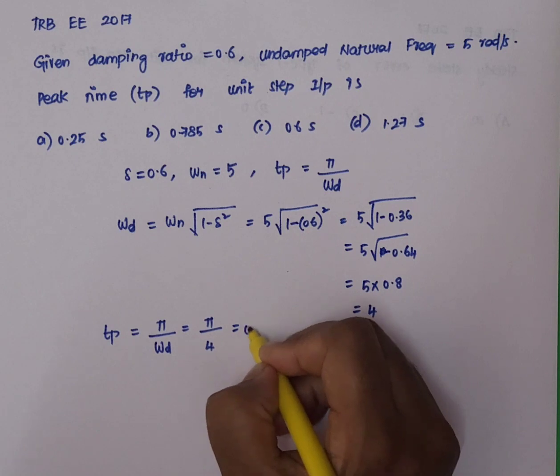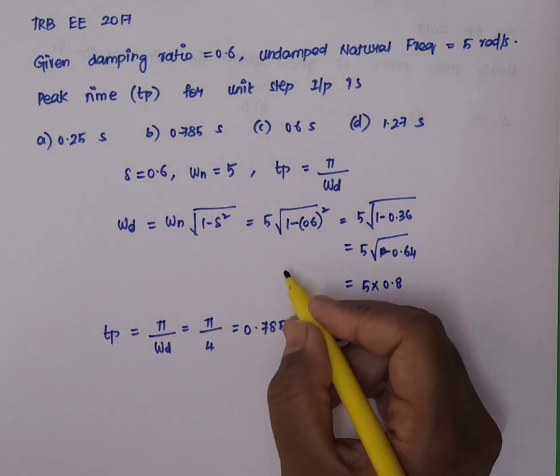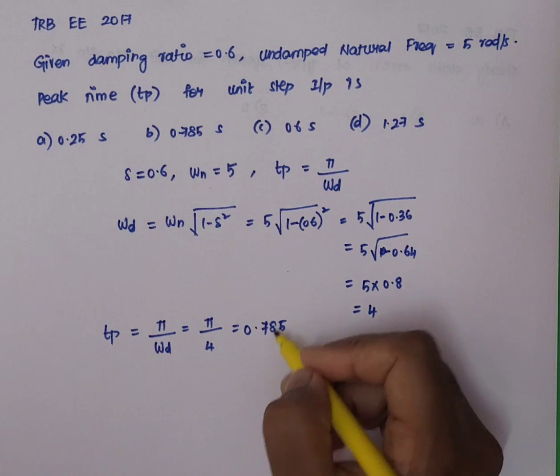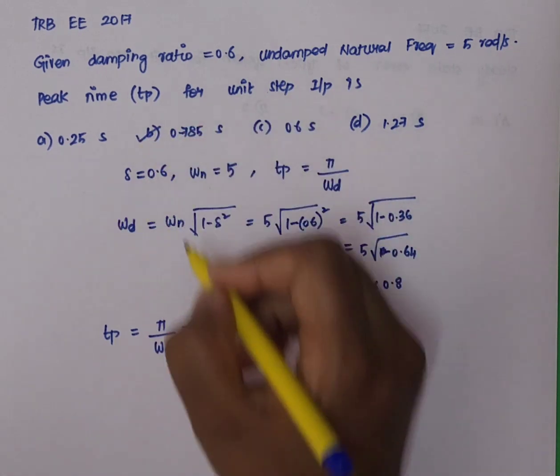So, π by 4 is equal to 0.785. So, if we check the option again, this is the second option. This is correct.